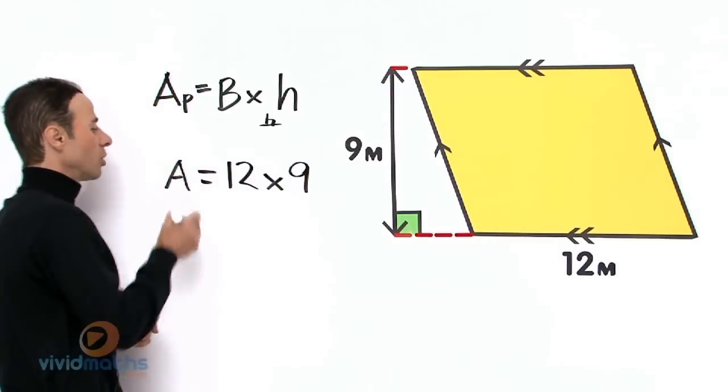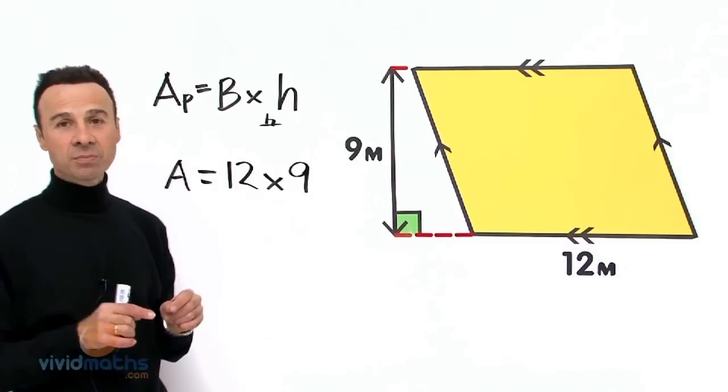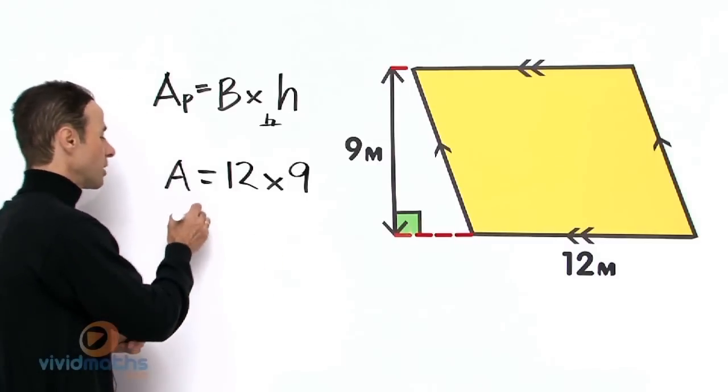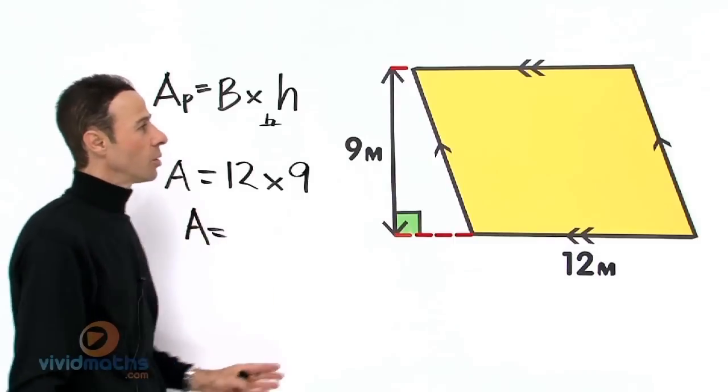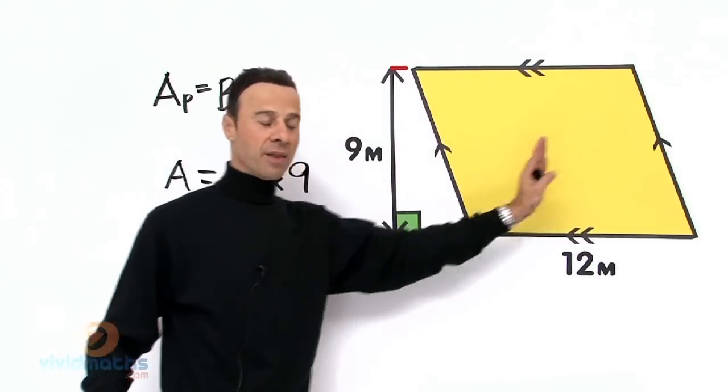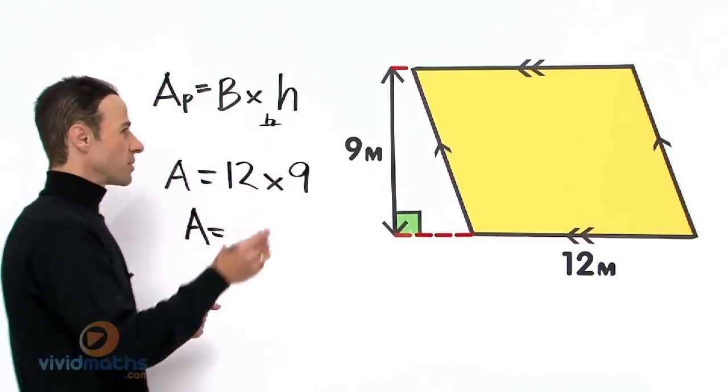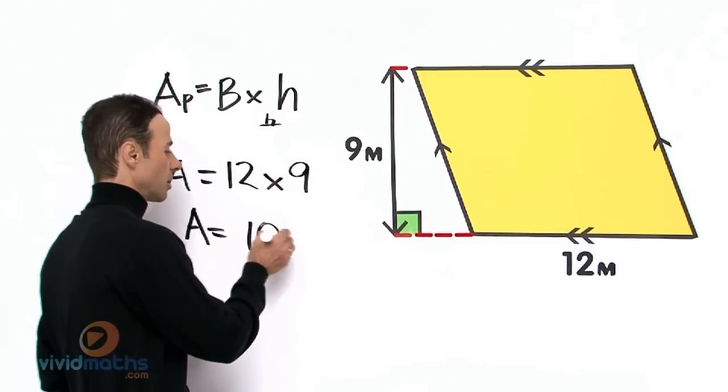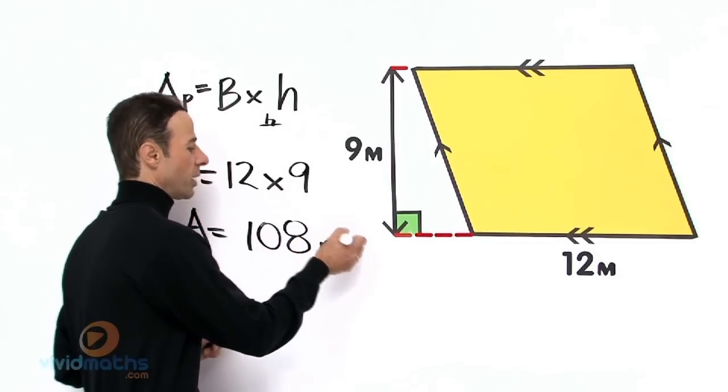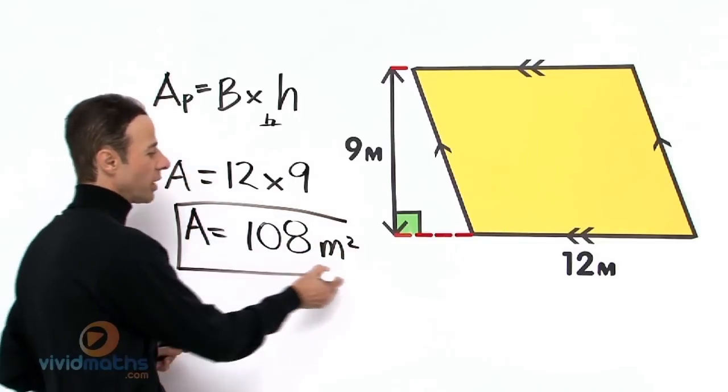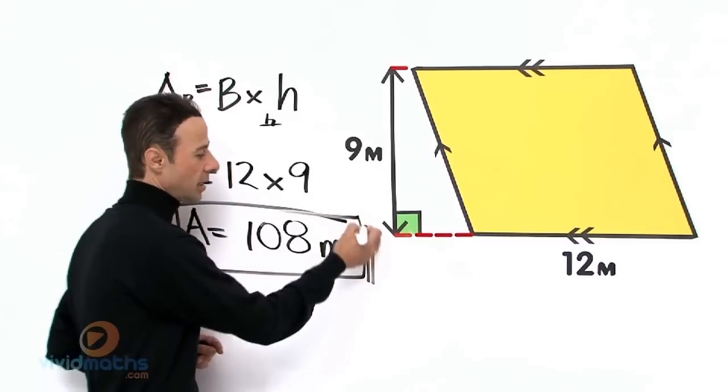Okay, that's the area. All we simply need to do is put it into the calculator and multiply. So the area—all that vivid yellow right in there—is 12 times 9, which is 108 meters squared.